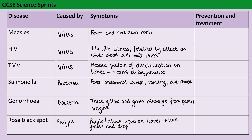For the viral diseases, we're mainly interested in how we can prevent people from catching them because we can't use antibiotics to treat them. For measles, many people receive the MMR vaccine, which protects you against measles, mumps and rubella, but there are also single vaccines available. The idea of those vaccines is that you're being exposed to the pathogen or to part of the pathogen, so you have that secondary immune response even before you've met the pathogen in the wild for the first time.